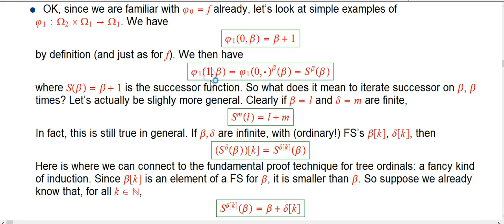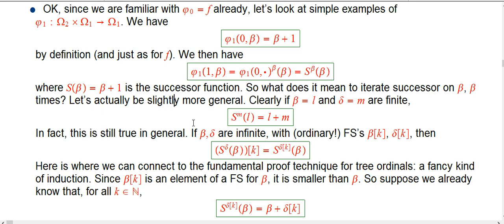By definition, the very first version of it with control argument zero is just successor — and that's just like f, so so far it's really not different from phi sub zero. Phi sub one with control argument one applied to beta: by definition, you take the phi sub one of zero function applied beta times to beta. I'll abbreviate that as S applied beta times, iterated beta times on beta, where S is the successor function. Let's actually not necessarily have them be the same argument quite yet, and not have the diagonalization idea.